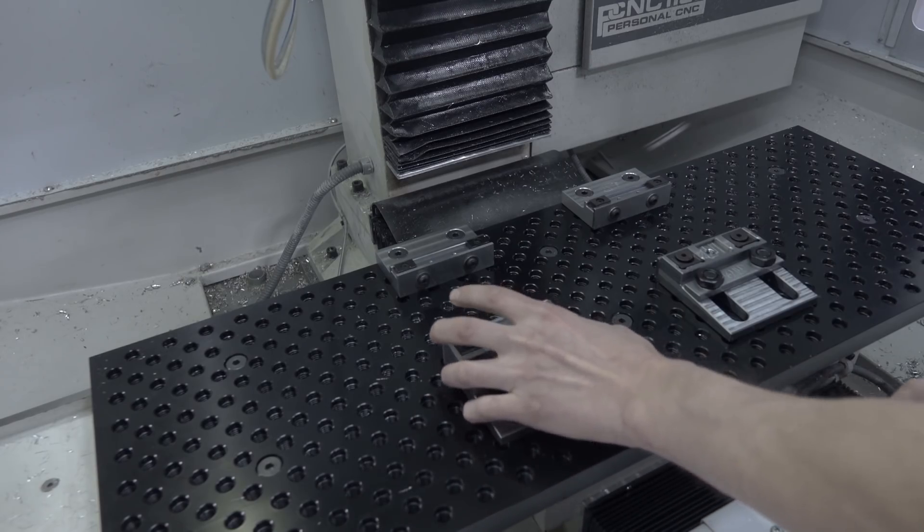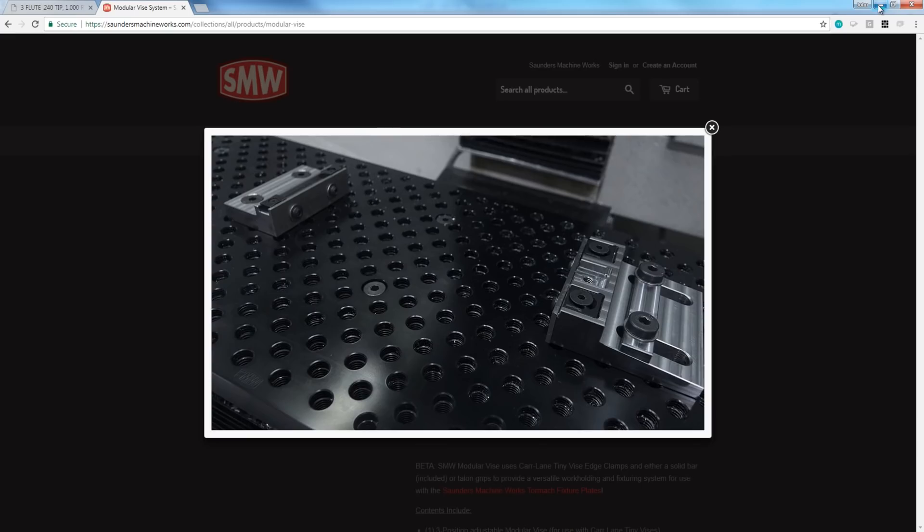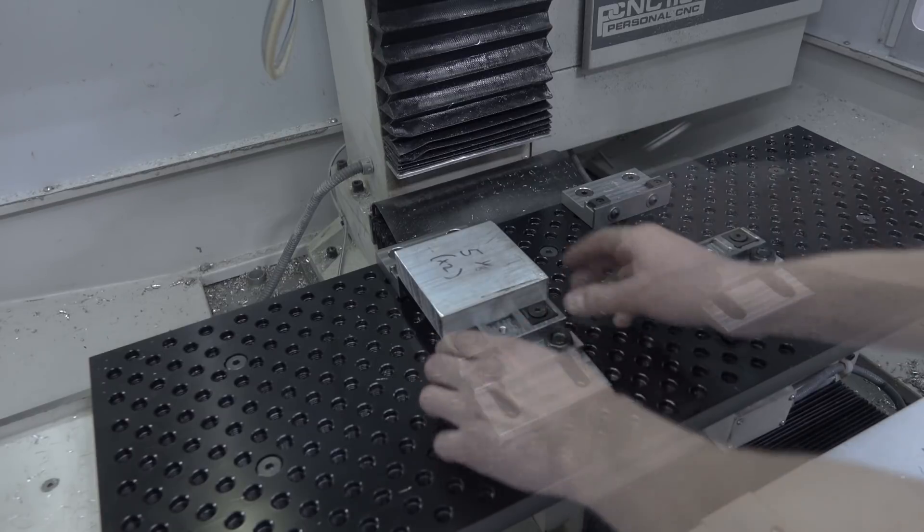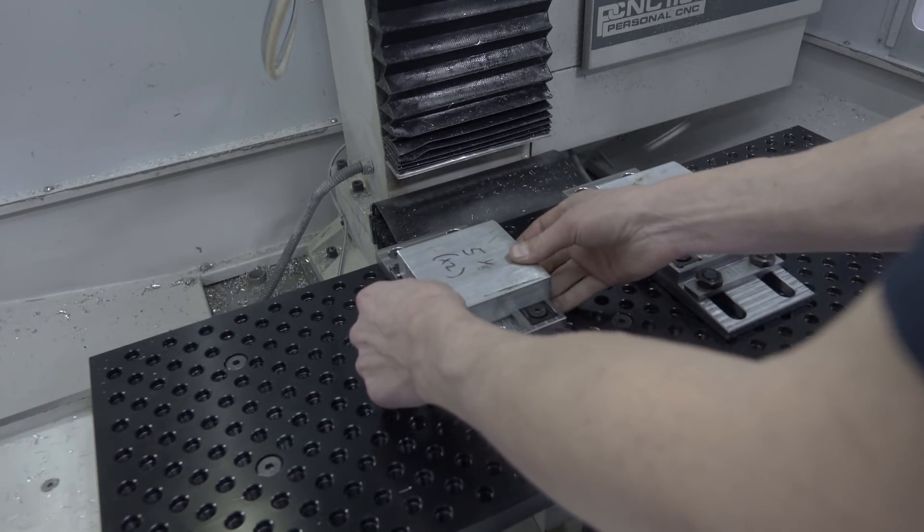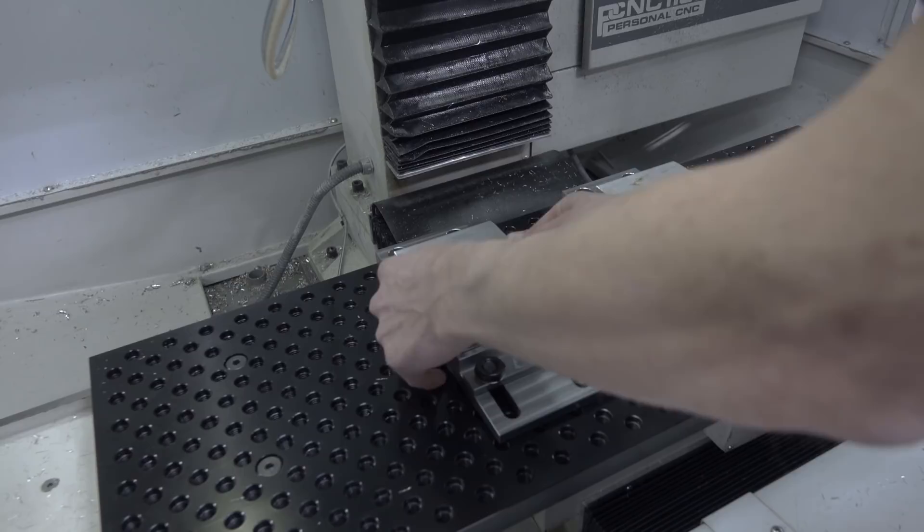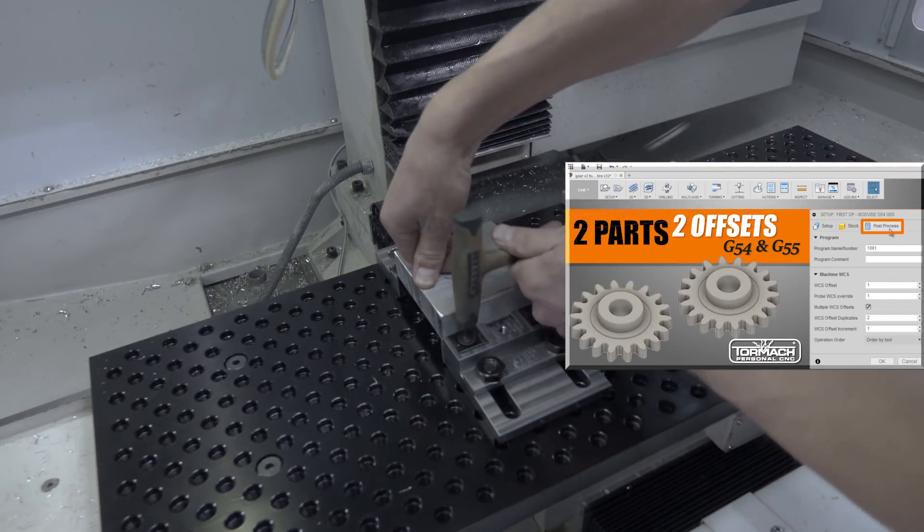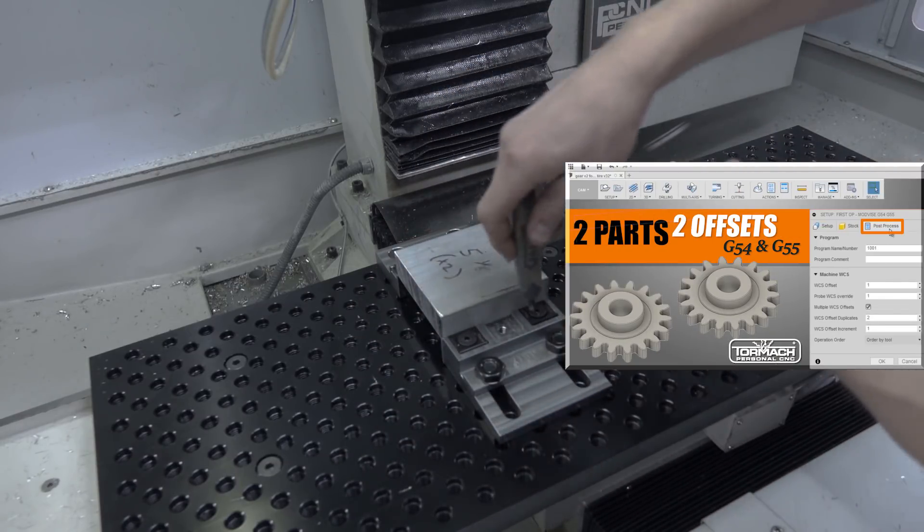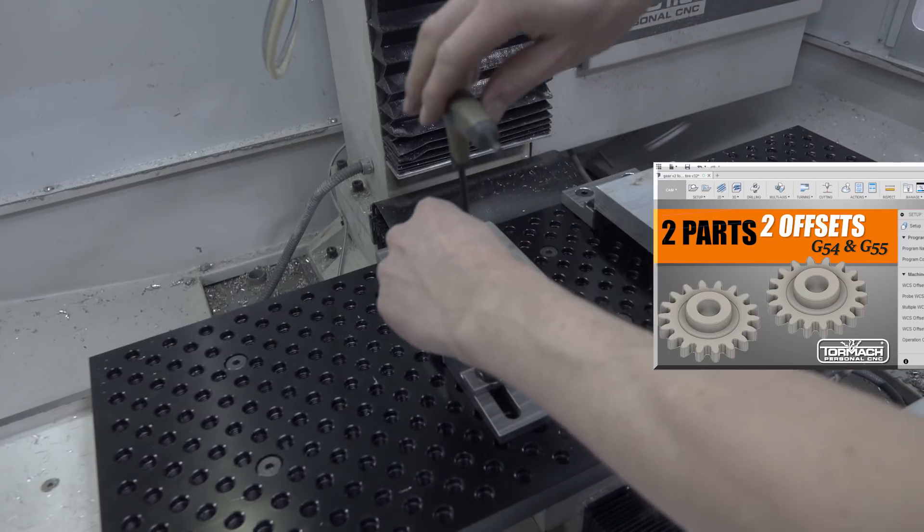We're using our new product, the Saunders MachineWorks ModVice or ModularVice system. We like it because in this case it's going to let us hold these two parts and we're going to do G54 and G55 work offsets. Card here, we're going to go over how you do that in Fusion in a separate video to not force everybody to sit through that, but super cool.